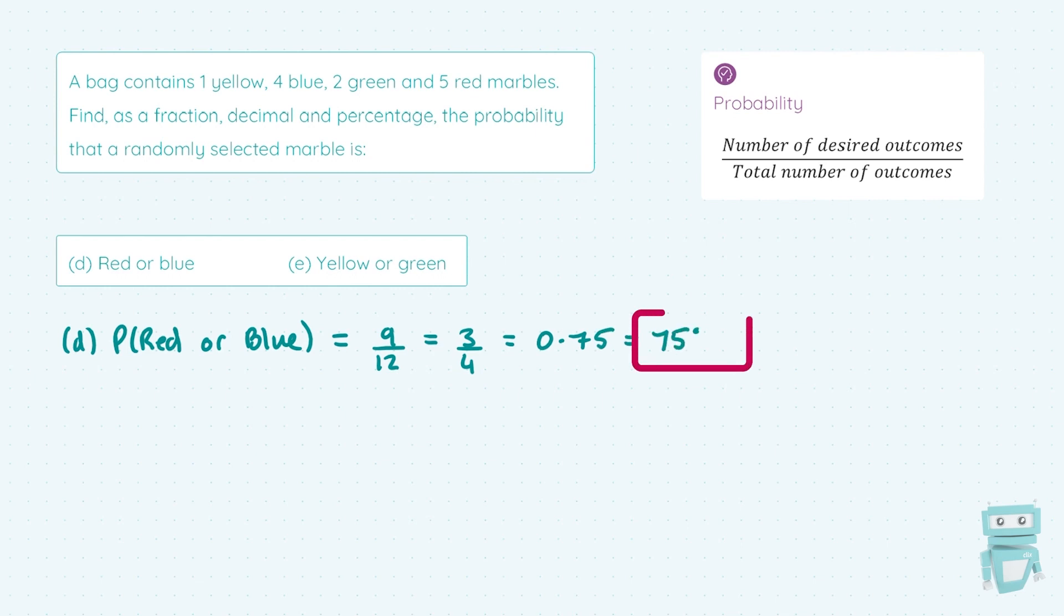Another way you can think about this question is you can take the probability of a red, which is 5 out of 12, and then add on the probability of a blue, which is 4 over 12, which gives us 9 over 12, and then the exact same answers as above. But I typically just go ahead and combine them straight away. But if you want to add them separately, you absolutely can.